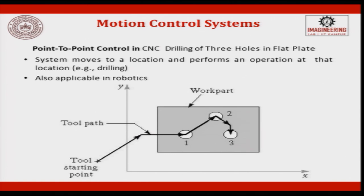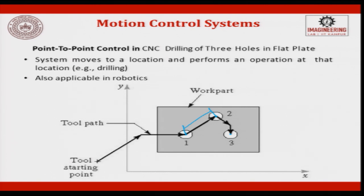In a point-to-point control system, the drill comes to position 1, performs the drilling operation, goes to position 2, drills, then goes to position 3 and drills. In between, what path it takes does not matter. It starts, accelerates, and stops at the destination. Point-to-point control in CNC drilling of 3 holes in a flat plate: the system moves to the location and performs an operation at that location. Applications include robotic welding, punching, spot welding, and drilling.